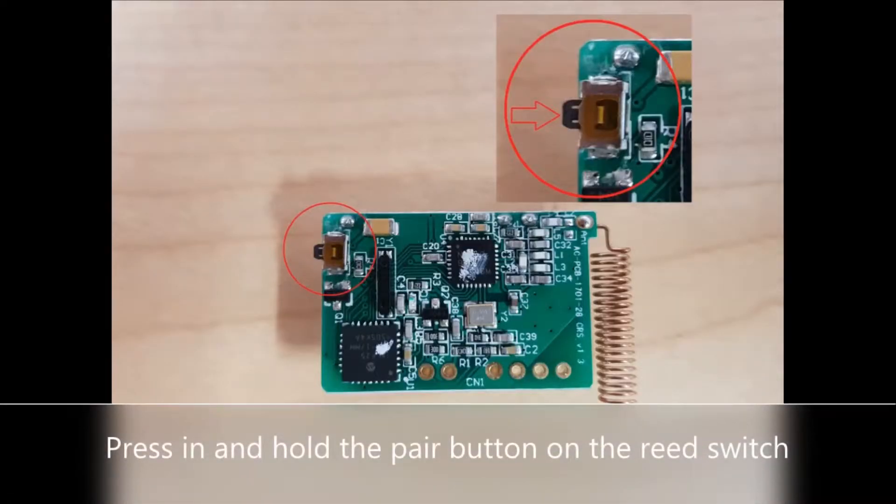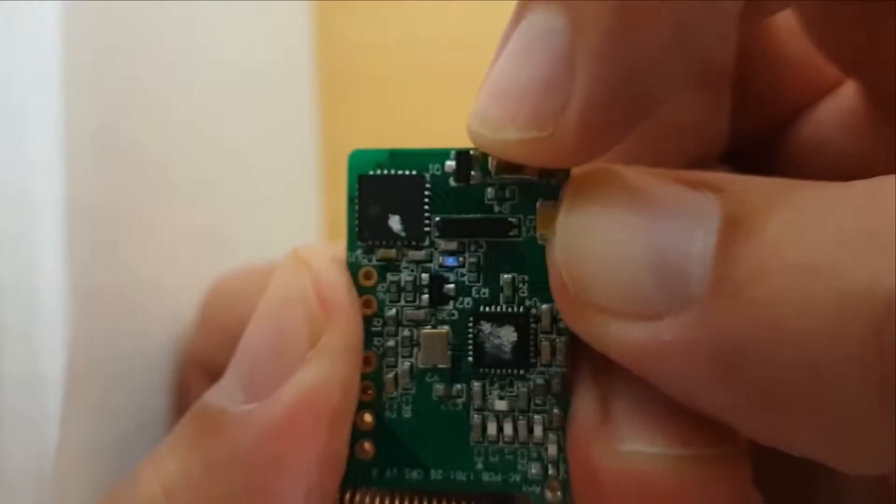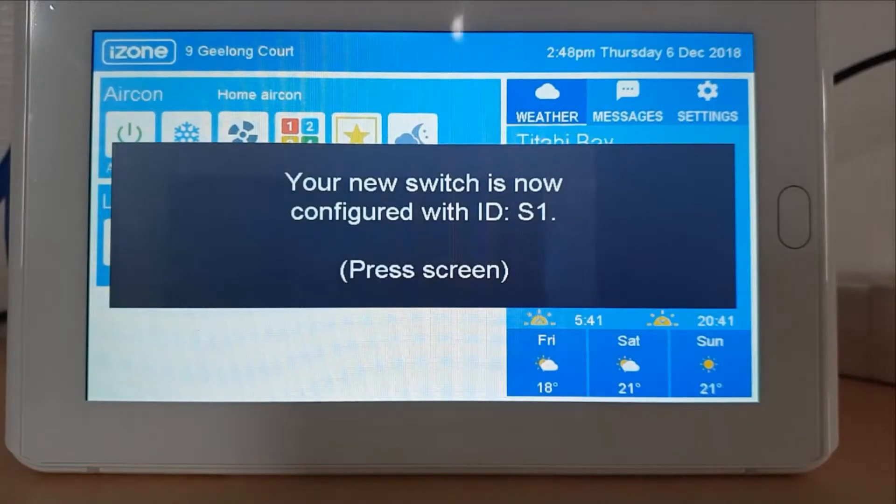Press in and hold the pair button on the reed switch and at the same time press the pair button on the lighting menu. The reed switch will blink blue and be given a device ID if successful.